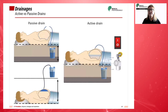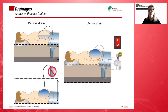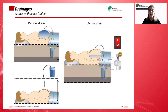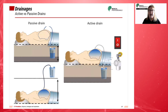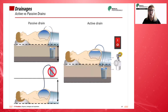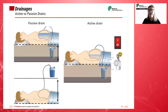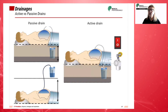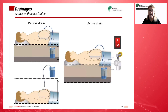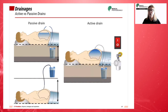Surgical drains allow removal of fluid and/or gas from a wound or body cavity. They are implanted into the body — for example, a nasogastric tube, a urinary catheter, vascular access ports, and ventriculo-peritoneal shunts or Penrose drains. They are generally made of rubber or silicone.